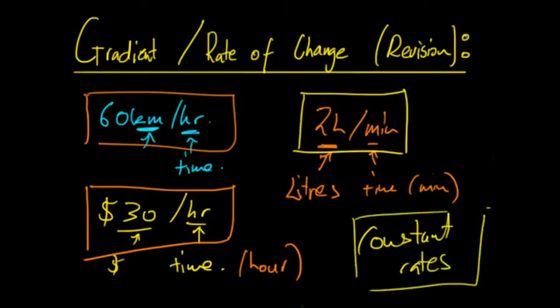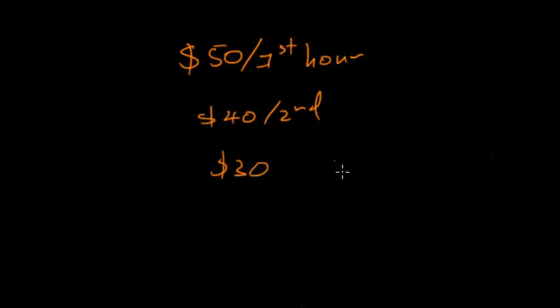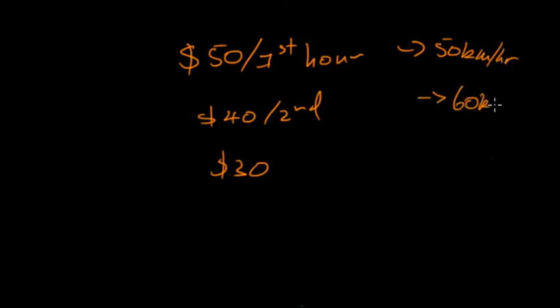Examples of non-constant rates: a mechanic might charge $50 for the first hour, then $40 for the second, then $30 for all others. Or if you're in a car you might go 50 kilometres an hour, then change to 60, go up to 70, and then back down to 60. These are variable rates of change.